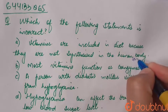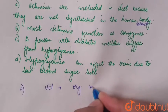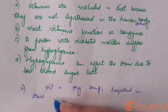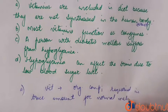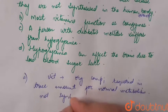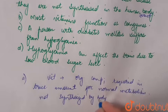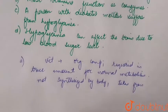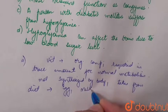This statement is correct. Vitamins are organic compounds required in trace amounts for normal metabolism. They are not synthesized by the body, so we get them from diet — for example, from eggs, milk, fish, vegetables, etc.